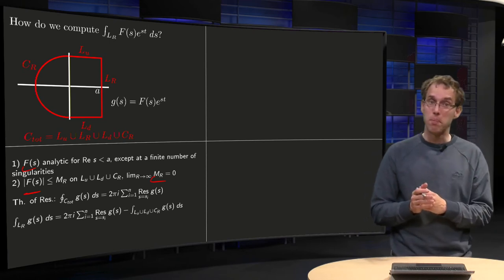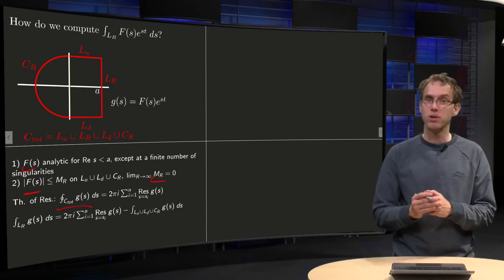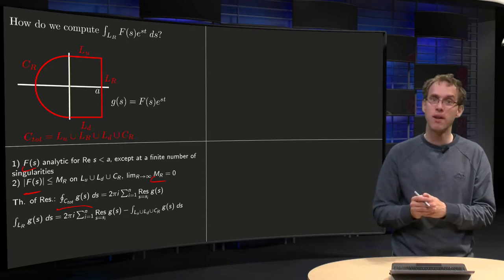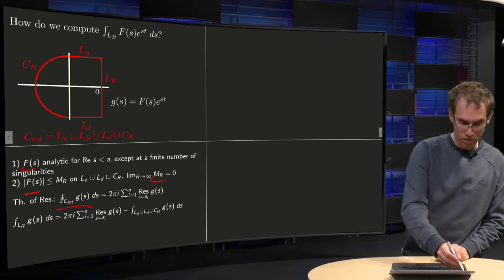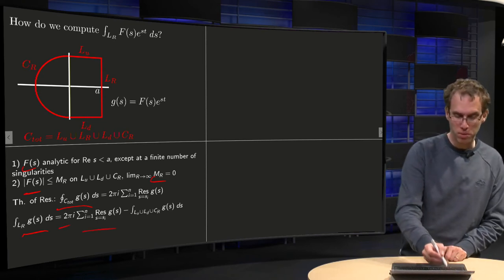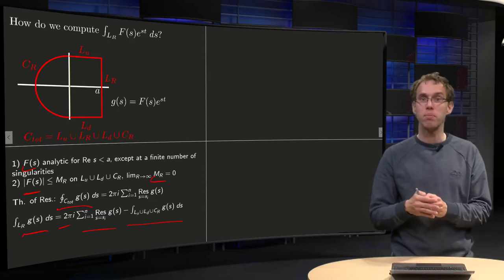In that case, you can apply the theorem of residues. The integral C_total G(s) will be 2πi times the sum of the residues, and your integral along L_R, the one you want to find, will be 2πi times the sum of the residues minus the integral with respect to the other parts.